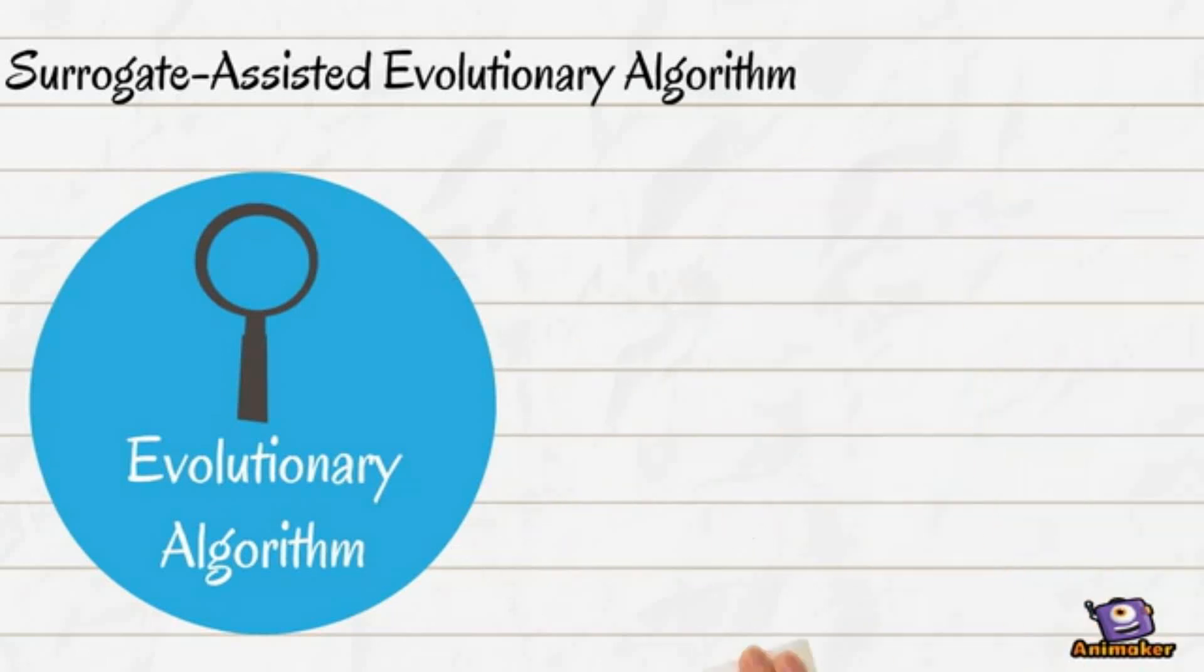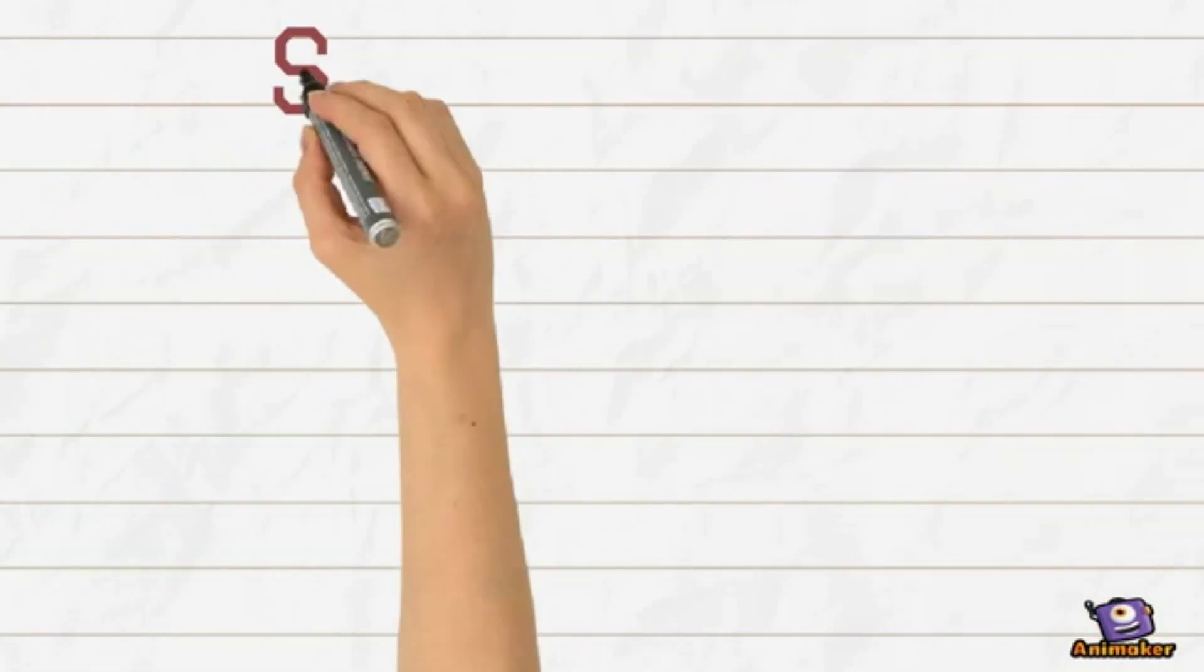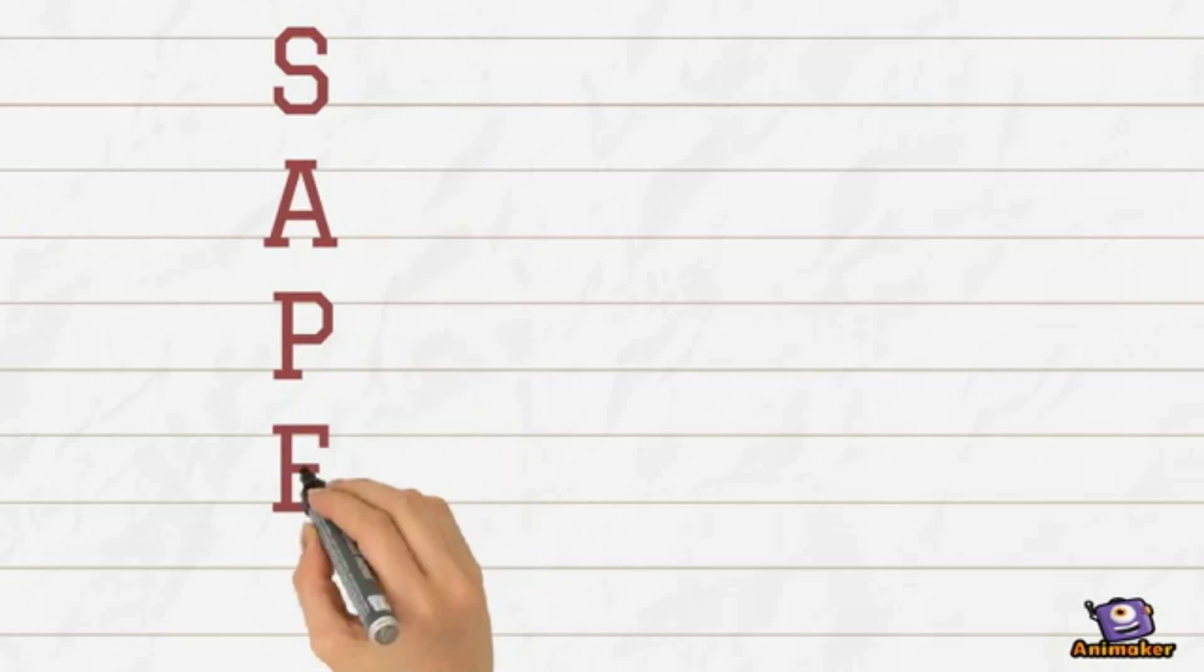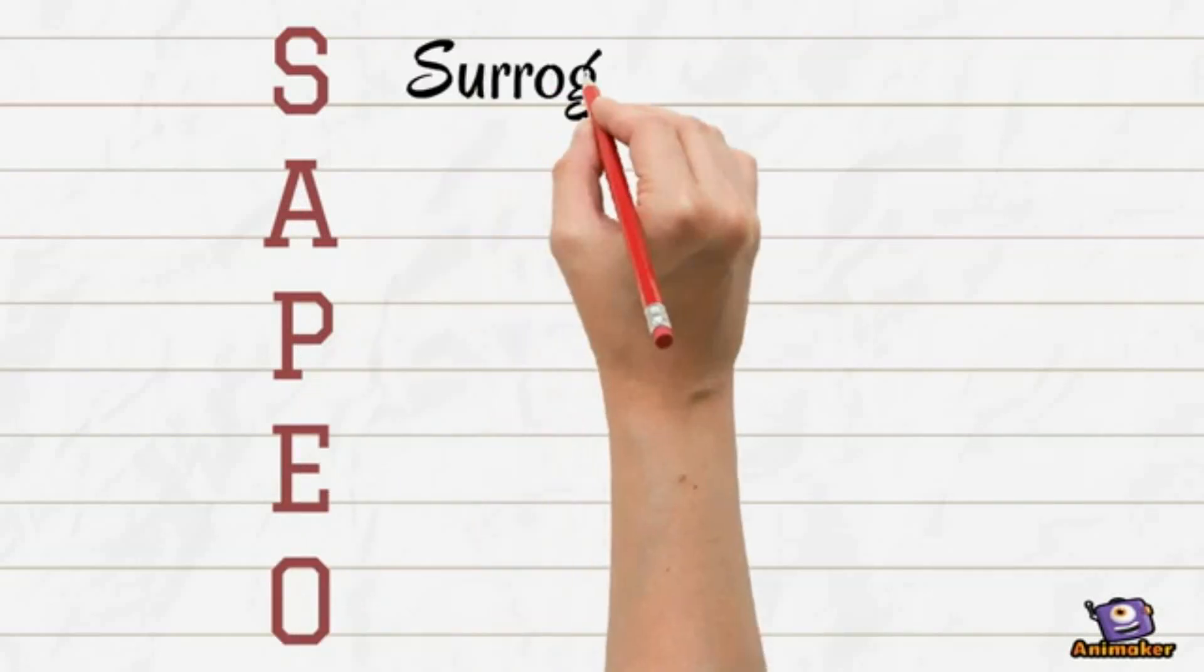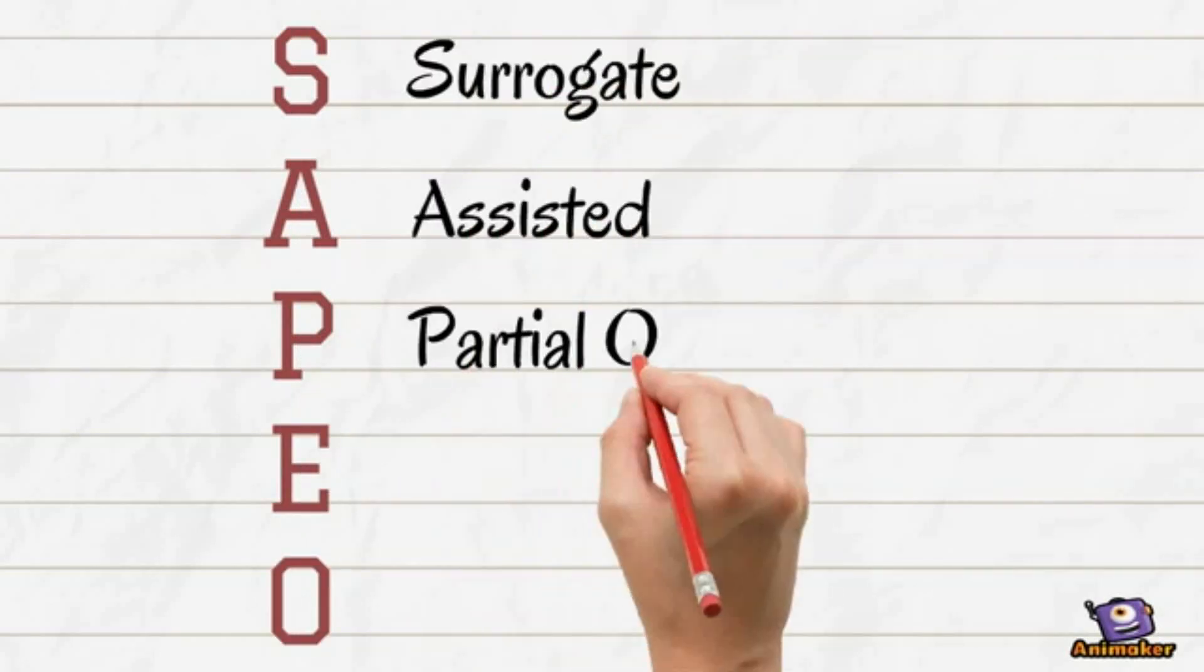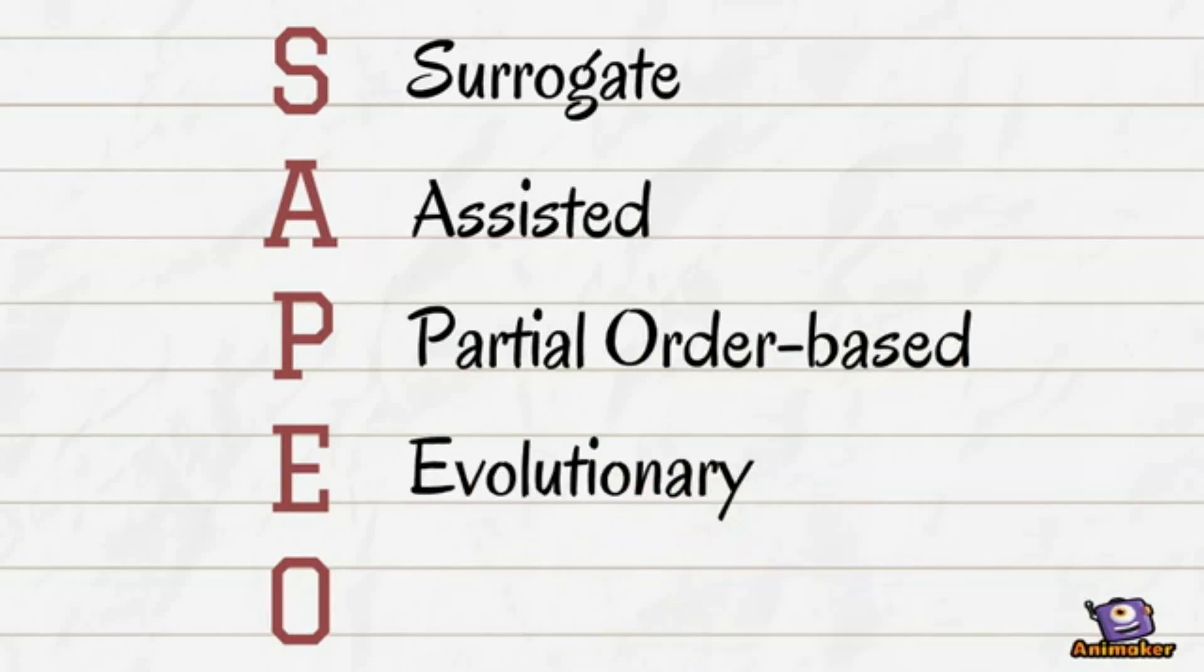As an example, let's look at an algorithm called SAPEO. SAPEO is short for surrogate-assisted partial-order-based evolutionary optimization. I know, that's a lot, so let's go through these components one at a time.